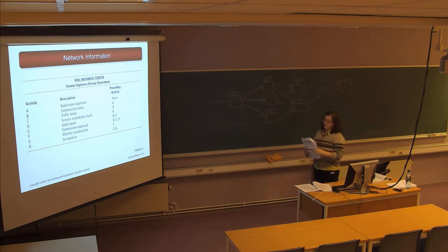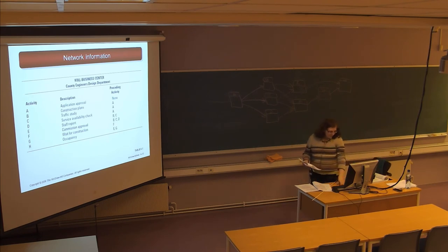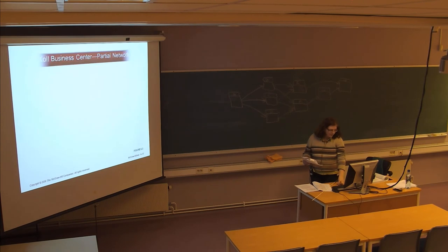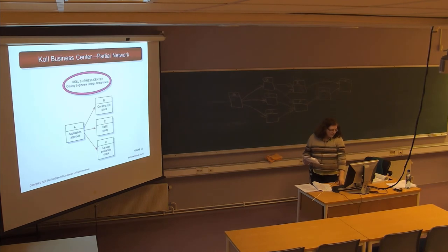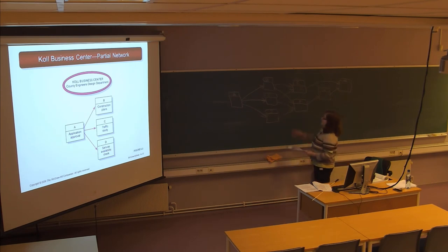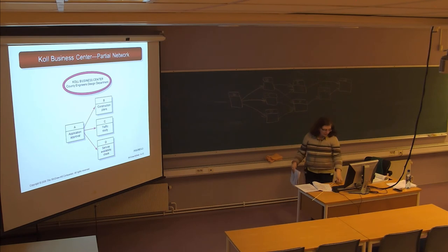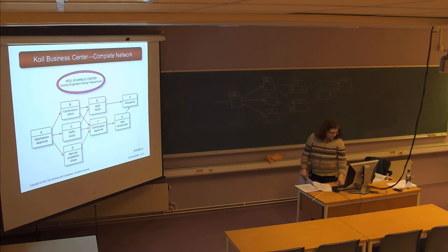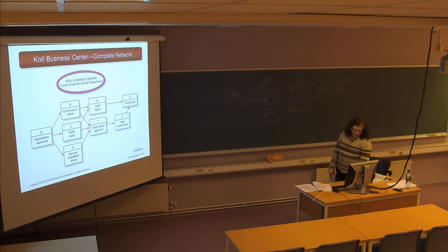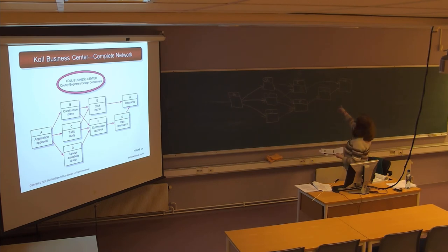So we drew the network based on the description of activities and their preceding activities. You can see this is a partial network showing that B, C, and D are preceded by A, and the complete network matches what we've drawn here.